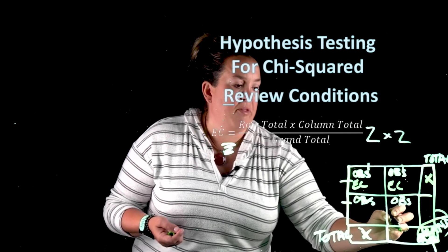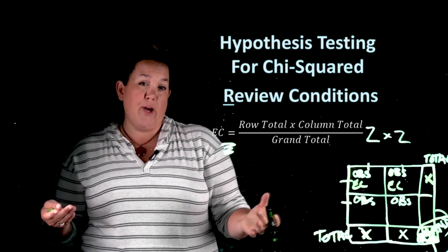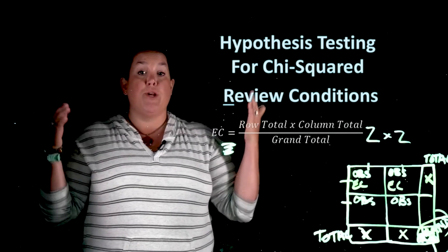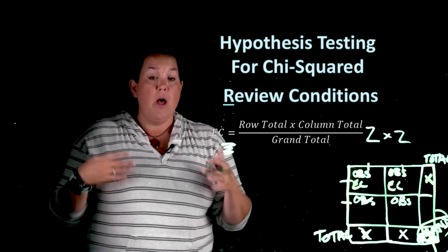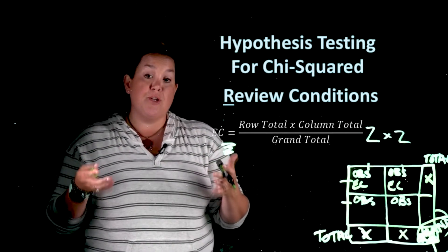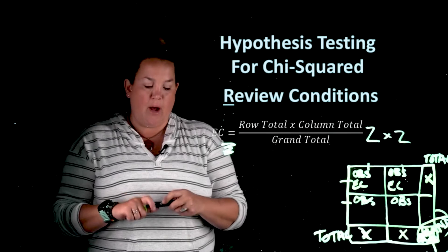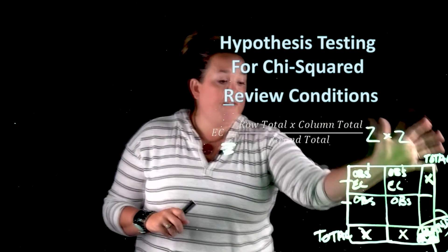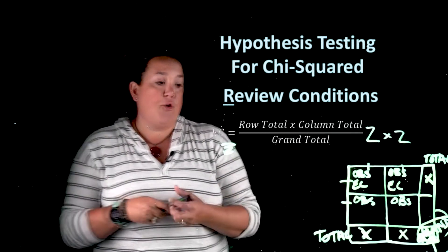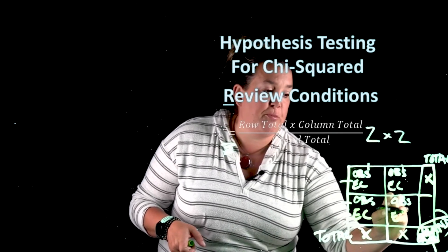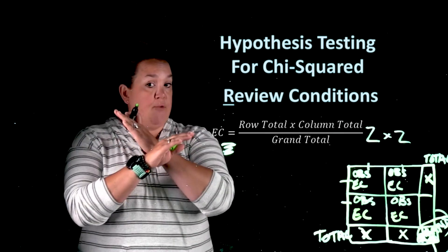It's a fairly easy calculation, but you need to do it for each cell. For one cell, you'd take its row total times its column total and divide by the grand total. For the next cell, you use the same row total but the different column total, divided by the grand total. What you're essentially doing is providing what you would expect to see — hence 'expected count' — if there was no association between the two variables.